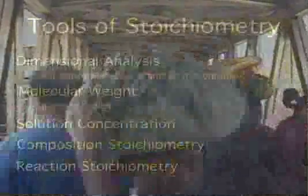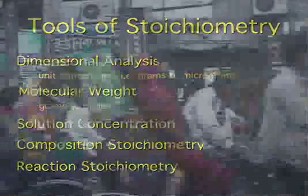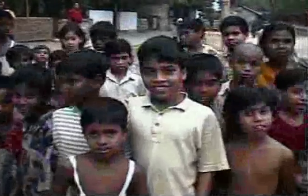Many of the examples in this course module are set in the story about arsenic in the groundwater of Bangladesh. This will allow you to use the stoichiometry tool set in the same way used by practicing chemists as they strive to rid the world of a serious health issue — the arsenic poisoning of millions of people in Bangladesh and elsewhere.